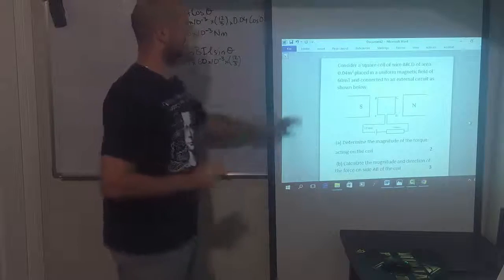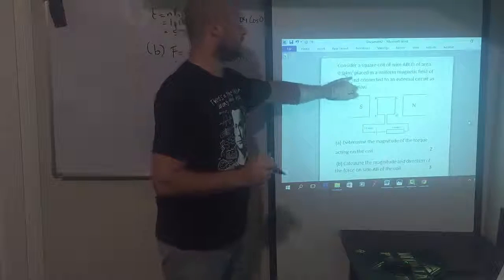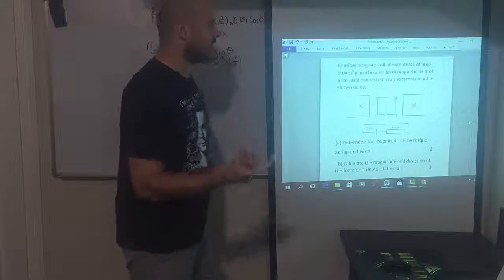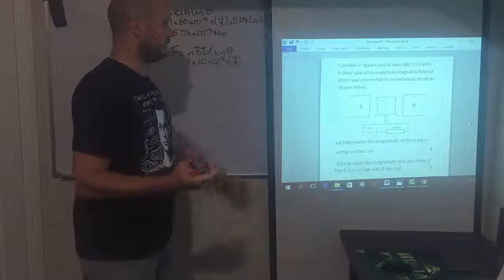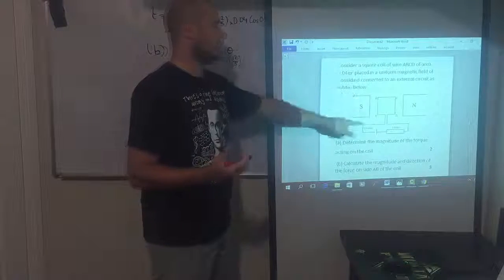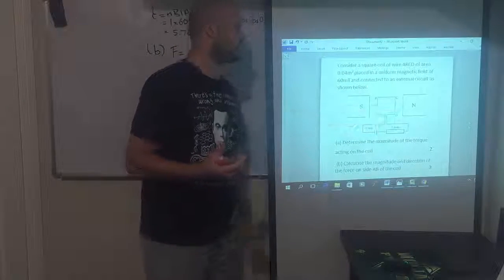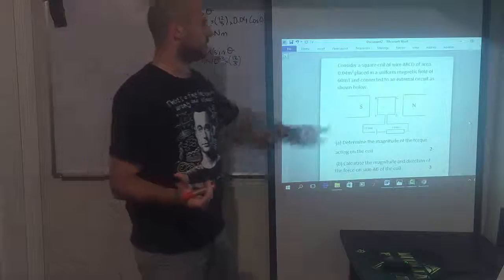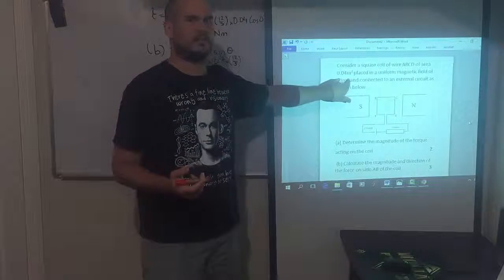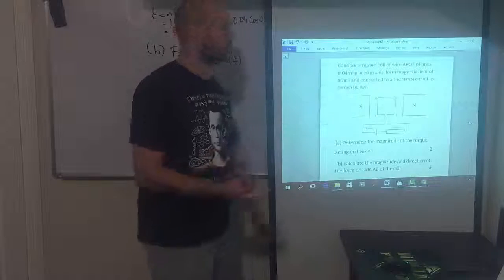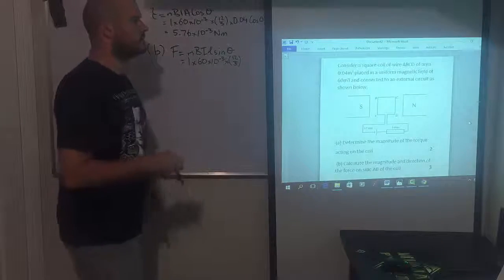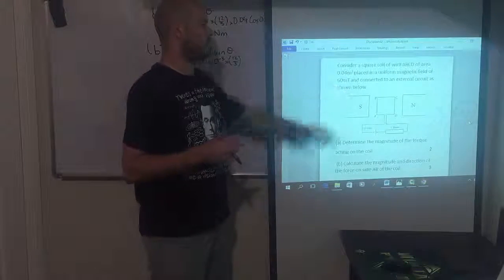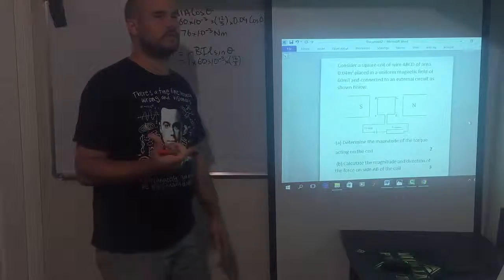And our L, so we're told that it's an area of 0.04 and we're told that it's a square, so the square, this is the area which is just AB times CD, those two are equal, so essentially what that is, that is like the length of the square squared, it's L squared. So to solve for the length of the side of the coil, we're just going to have to square root that 0.04 which will come out to be 0.2.